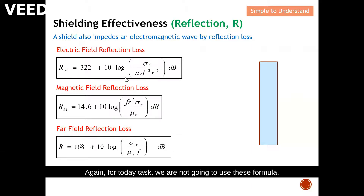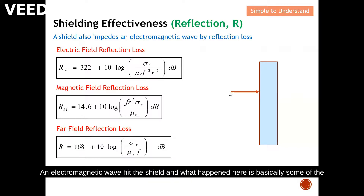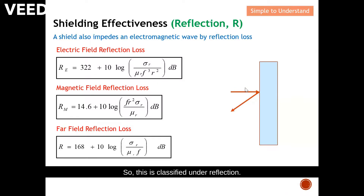We also have another condition: far field, and this is the formula to calculate reflection loss for far field. For today's discussion, I will not use these formulas yet — I'll explain how to utilize them later. For now, let's understand what reflection is: an electromagnetic wave hits the shield, and most of the energy — especially for a conductive material — is reflected back. This is classified as reflection.